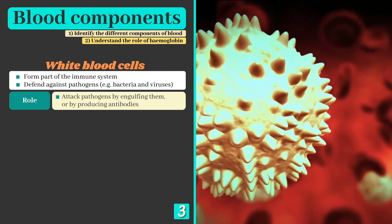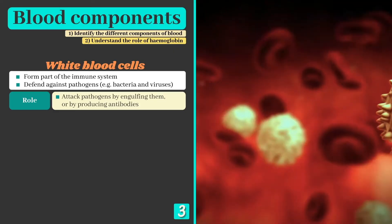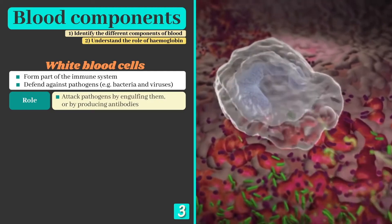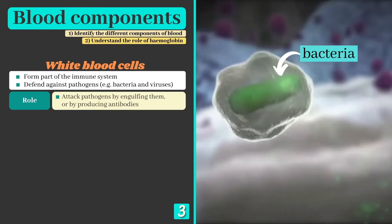Our white blood cells form part of the immune system and are there to defend the body against disease-causing organisms or pathogens such as bacteria and viruses. They do so by engulfing them or by producing antibodies to attack them.